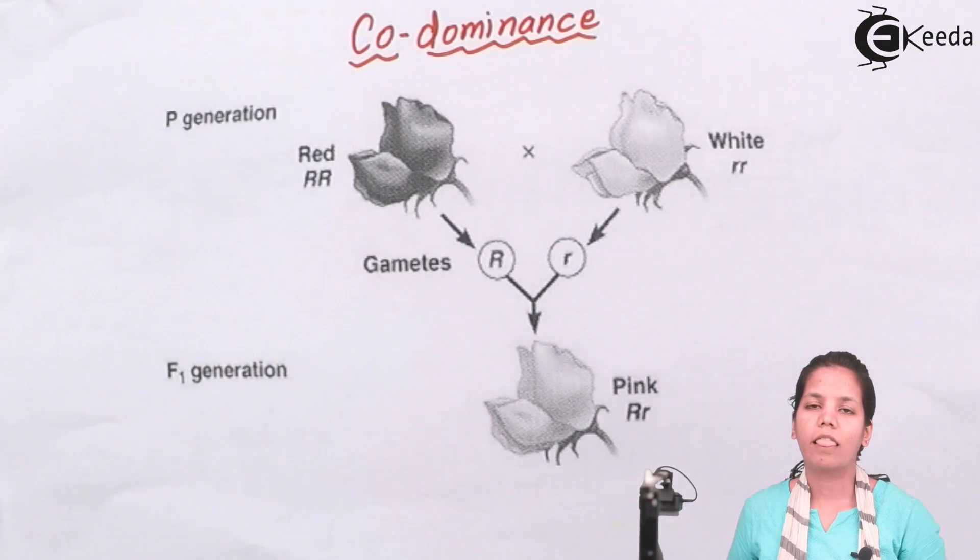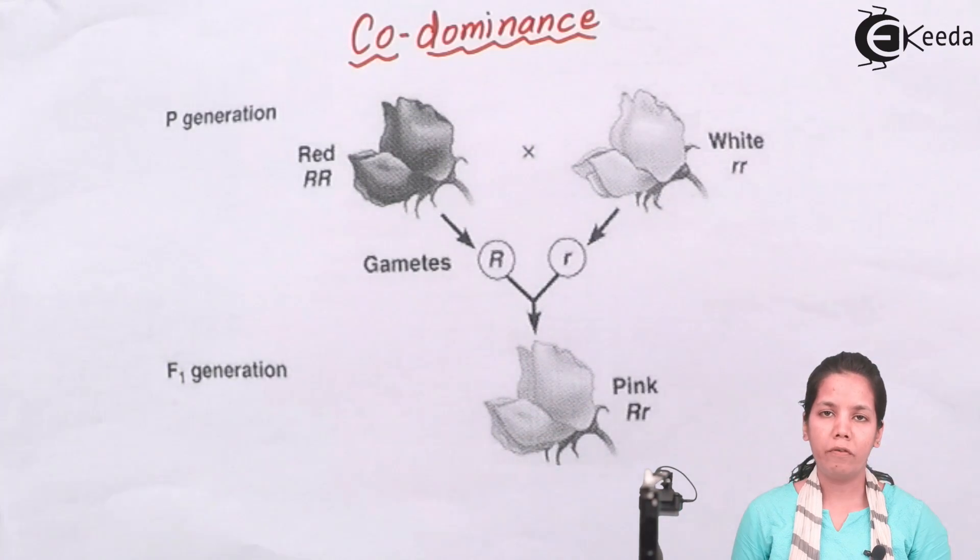Students, this was about codominance. How two different heterozygous parents combine randomly to produce a gamete which has qualities of both. I hope you all are clear with this concept of codominance. Thank you.